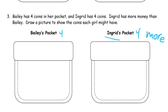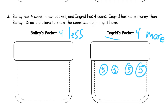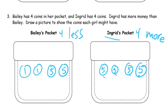If Ingrid has more, Bailey has less. So let's see — what's one I can think of? Ingrid has 4 coins, so she could have 4 nickels. And Ingrid has 5, 10, 15, 20 cents.